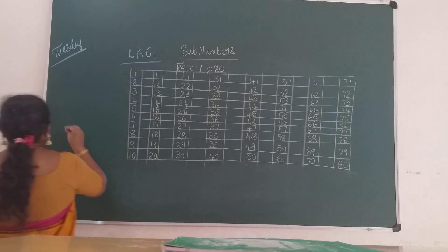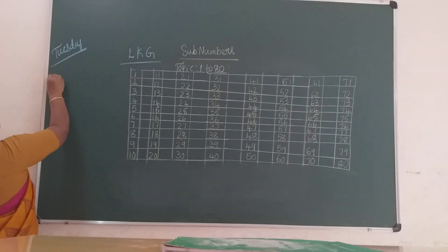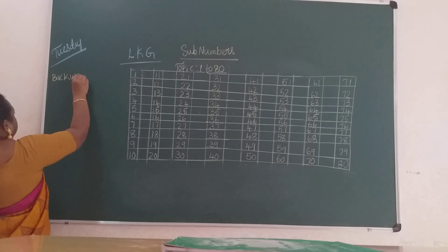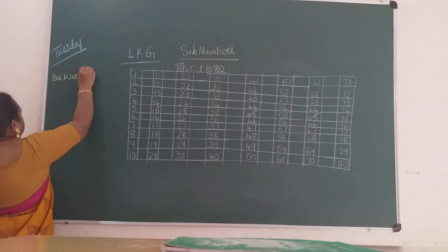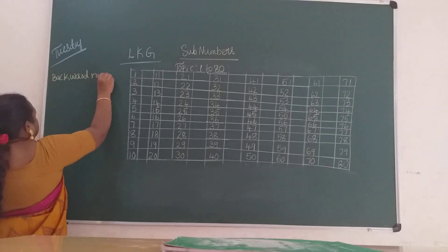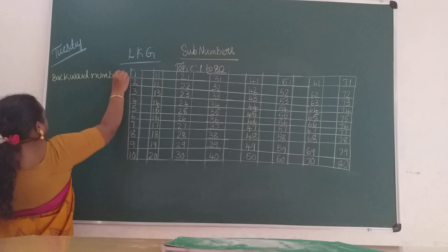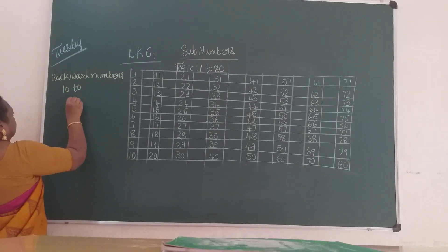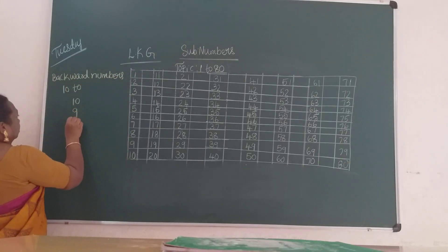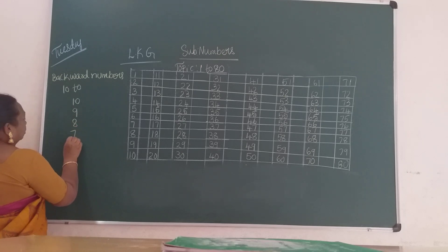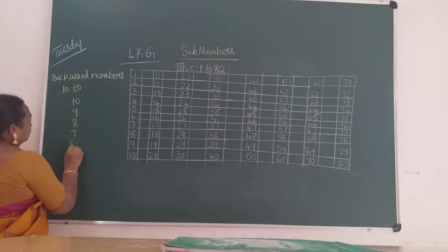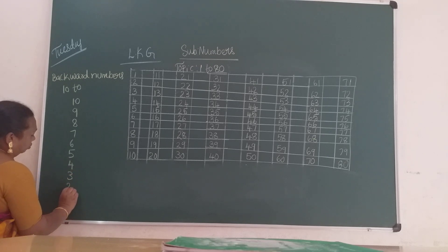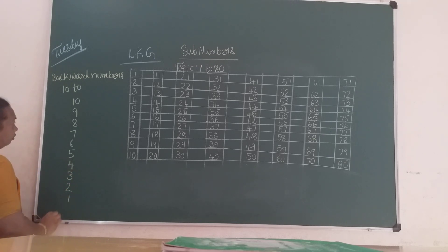Backward numbers, 10 to 1. 10, 9, 8, 7, 6, 5, 4, 3, 2, 1. Backward numbers.